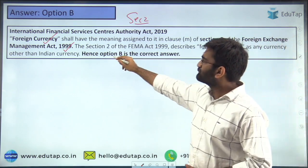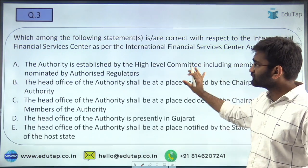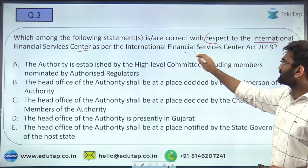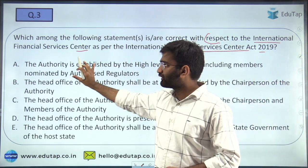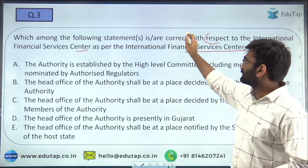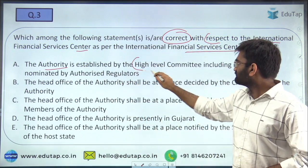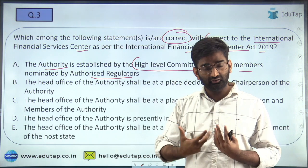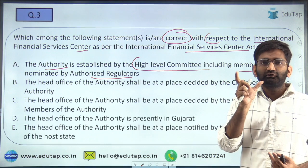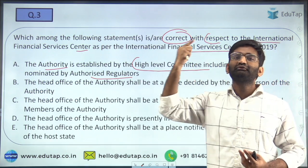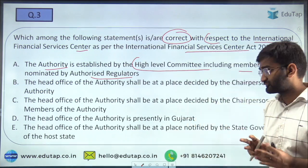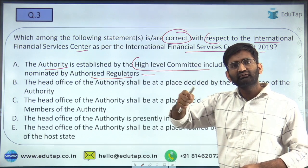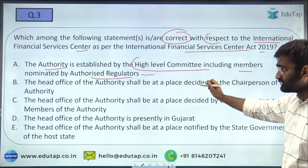Option B is correct for Question 2. Moving on to the third question: which among the following statements is correct with respect to the International Financial Services Center (IFSC) as per the IFSCA Act? The first statement says the authority is established by a high-level committee including members nominated by the authorized regulators. We know from Section 2 that authorized regulators are part of Schedule 1 of the Act.